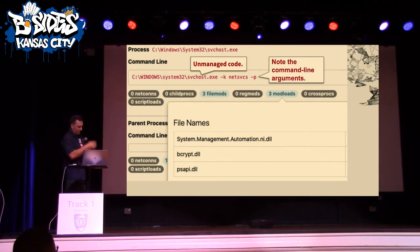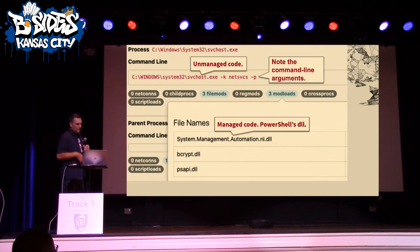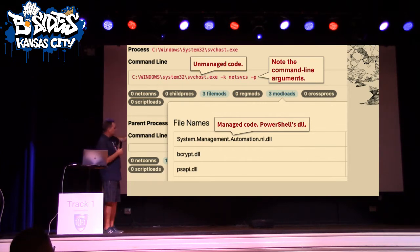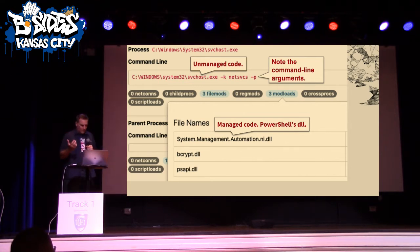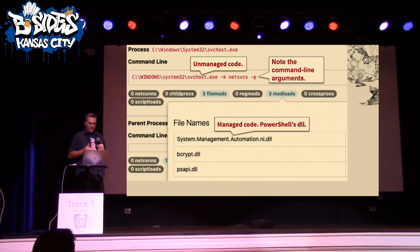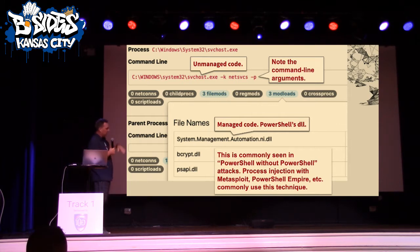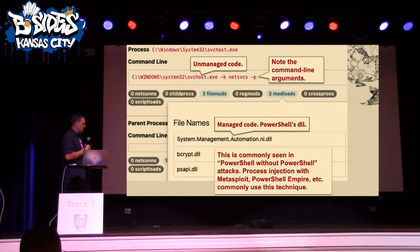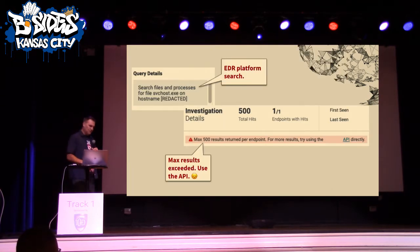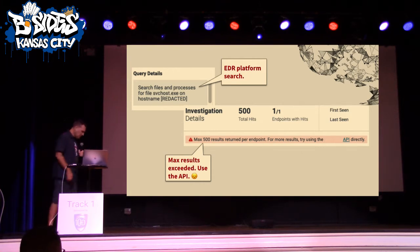SvcHost is loading System Management Automation — which is PowerShell's DLL — managed code written in .NET that runs in a virtual machine. It's really weird to see an unmanaged process loading managed code like this. Typically when you see something like this, it's because an attacker has used Metasploit or PowerShell Empire and injected into a process like SvcHost, and the payload brings along the PowerShell DLL. So we jumped to the EDR platform and started running queries.